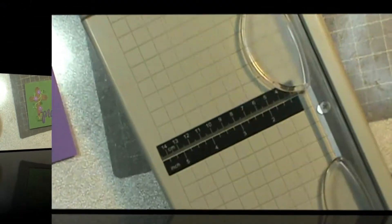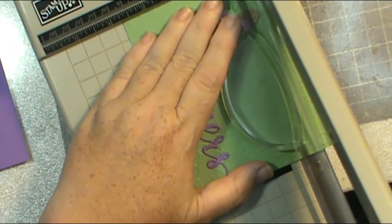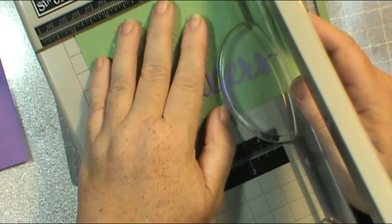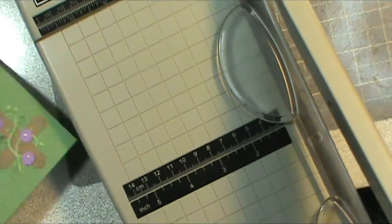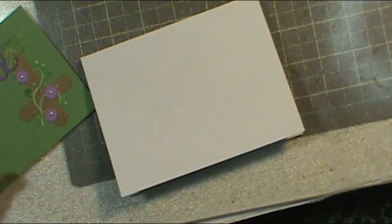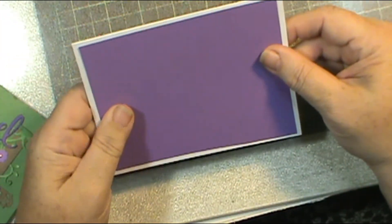I'm going to cut me a couple layers to put on the card and I'm going to trim this one down first. I trim it down to three and three quarters by five, and then I'm going to trim down the purple piece to be four by five and a quarter.